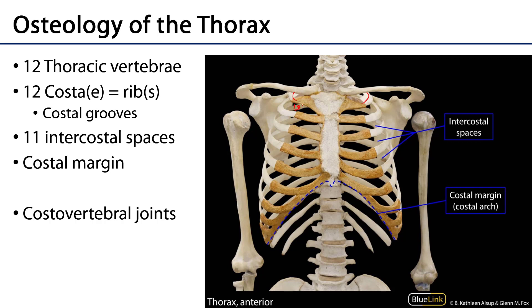So this is the first intercostal space, this is the second intercostal space, and so on and so forth. The inferior margin of each rib is a region known as the costal groove, and this is going to be important for the neurovascular bundle that predominantly serves the intercostal space.